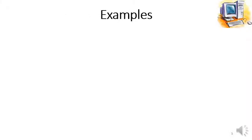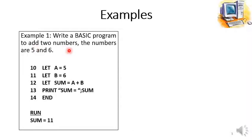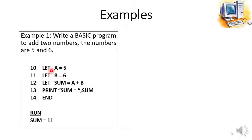Here we have some examples from your book. Example number one: write a BASIC program to add two numbers, five and six. We have to calculate the sum of these two numbers. First, we declare 'let a = 5'. A is a variable containing the first value, five. Then 'let b = 6'. You can assign any names to these variables — it is your choice. A contains value five and b contains value six, assigned with the help of the assignment operator.